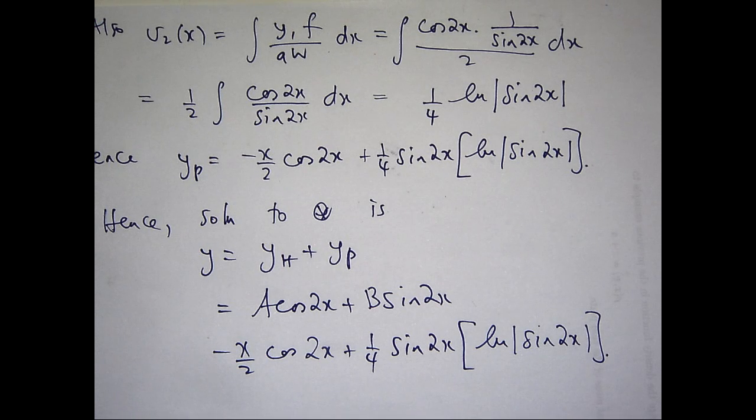So that's the solution, the general solution to star. Big A and big B are arbitrary constants. We don't know what they are. We could calculate them if you wanted to, if we had the initial conditions, but we don't in this case.